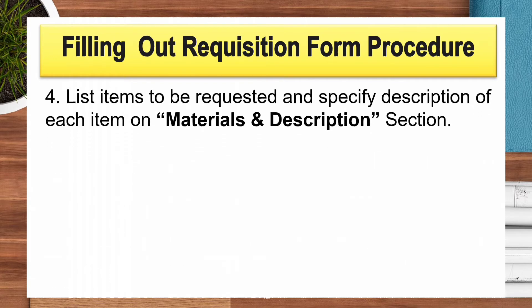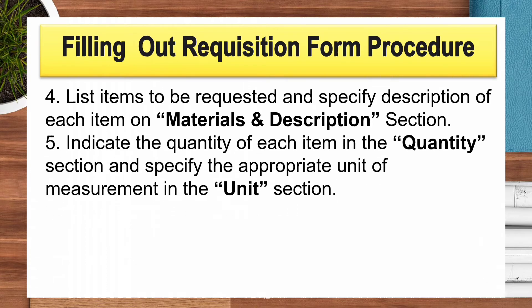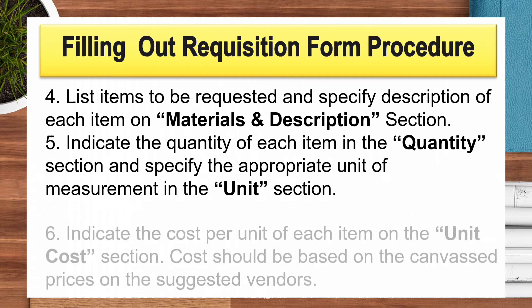Four, list the items to be requested and specify the description of each item on the materials and description section. Five, indicate the quantity of each item in the quantity section and specify the appropriate unit of measurement in the unit section.